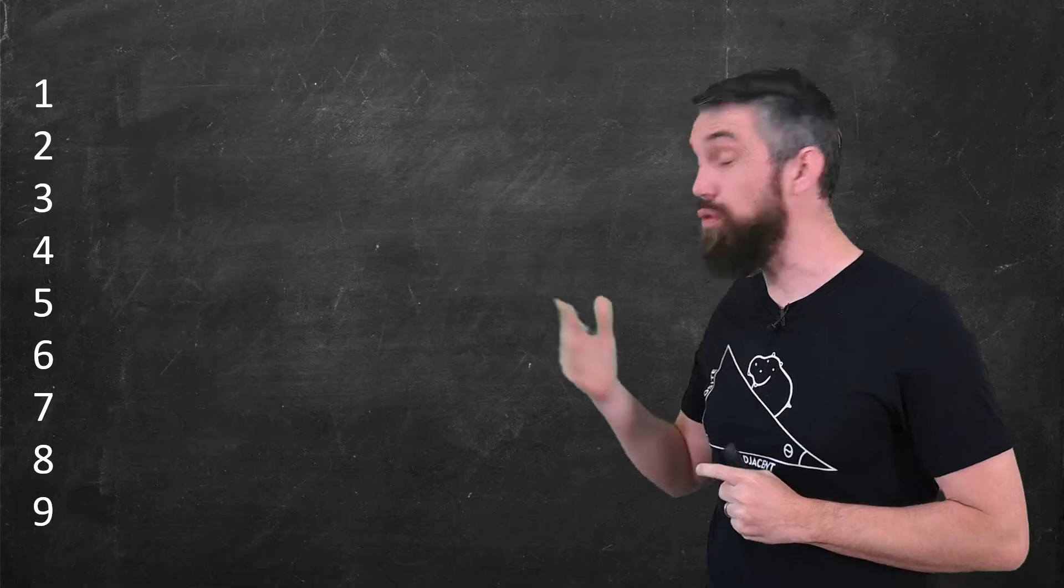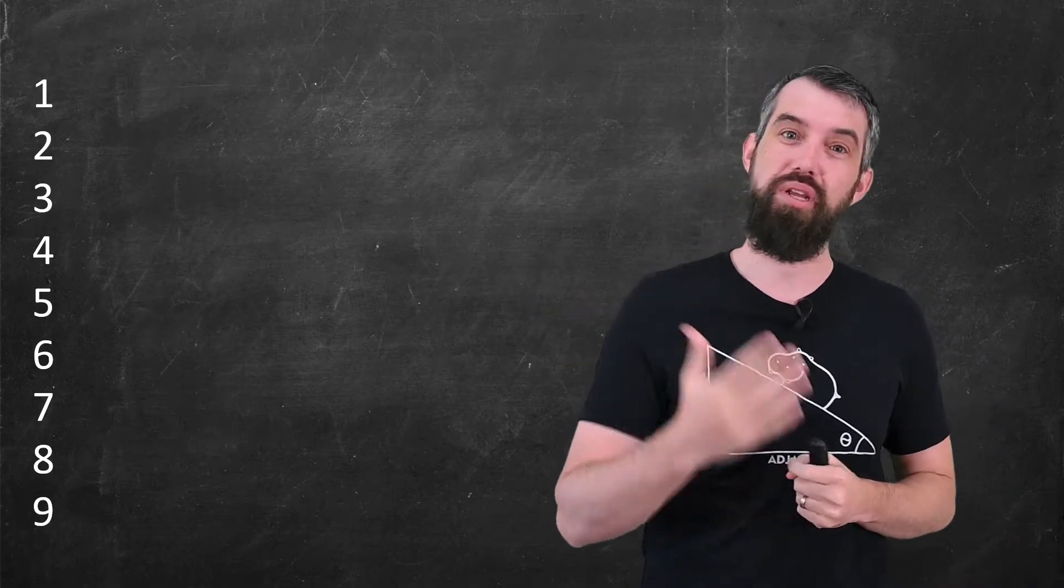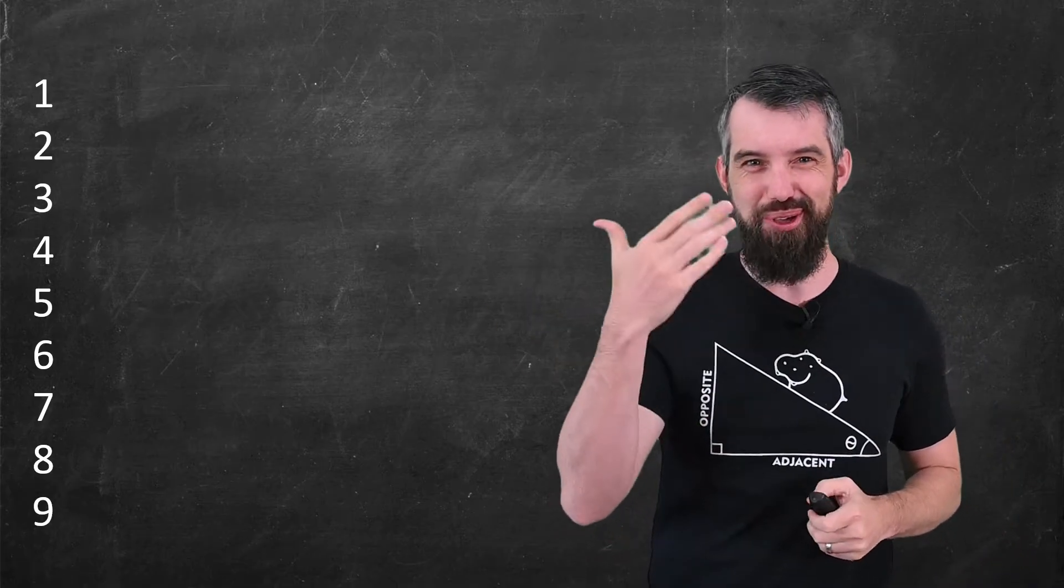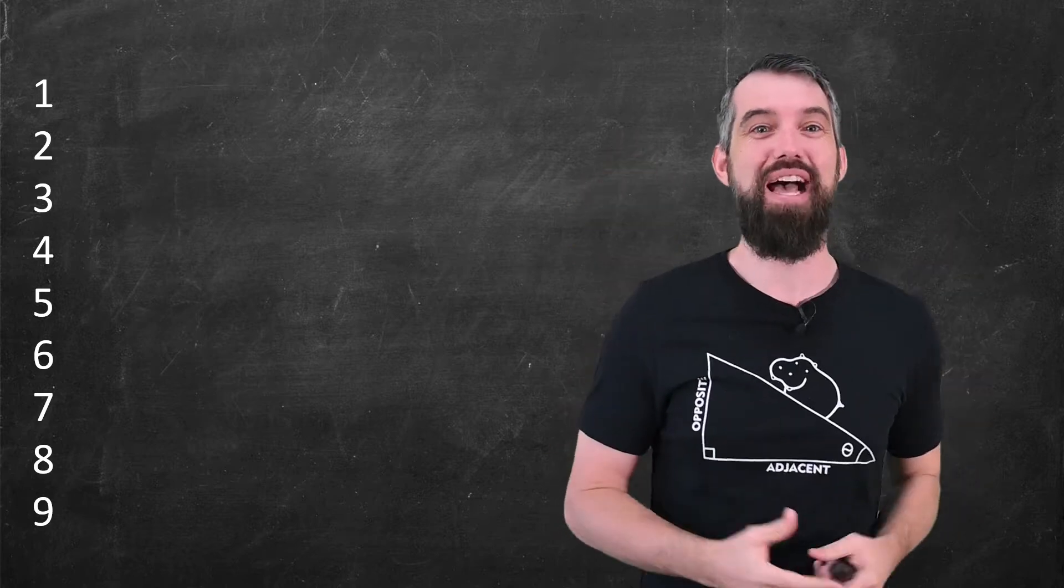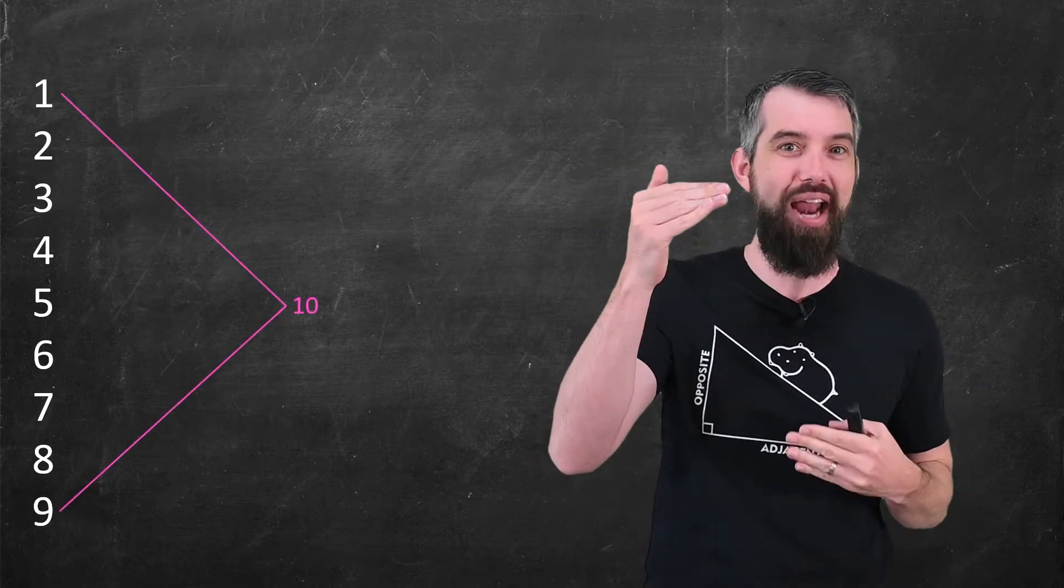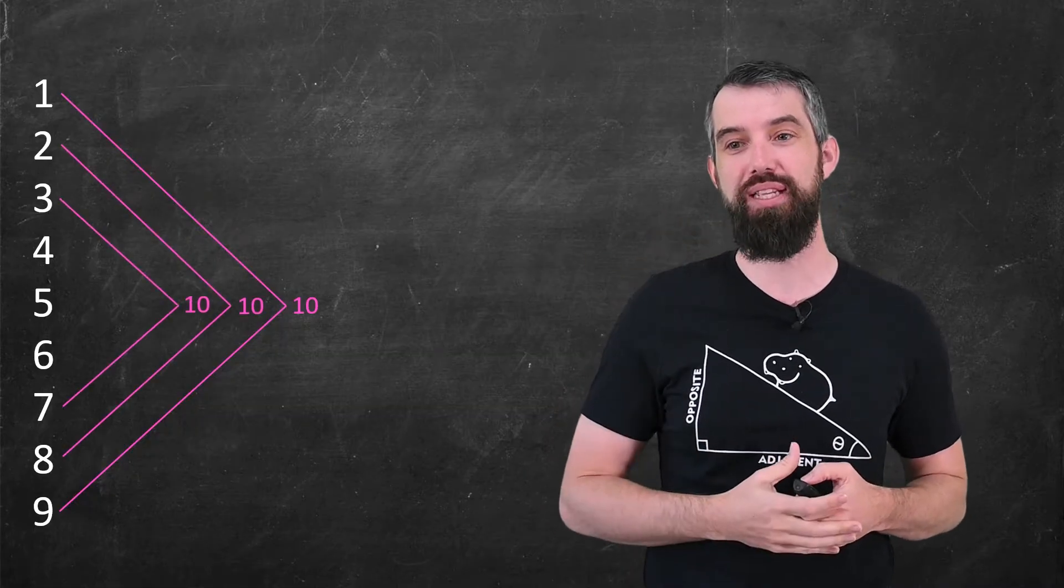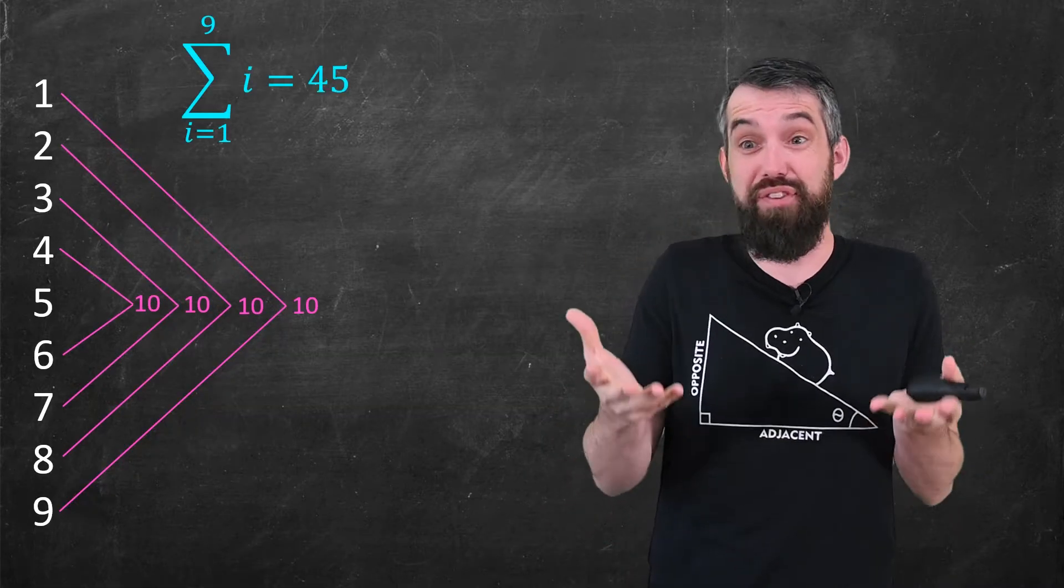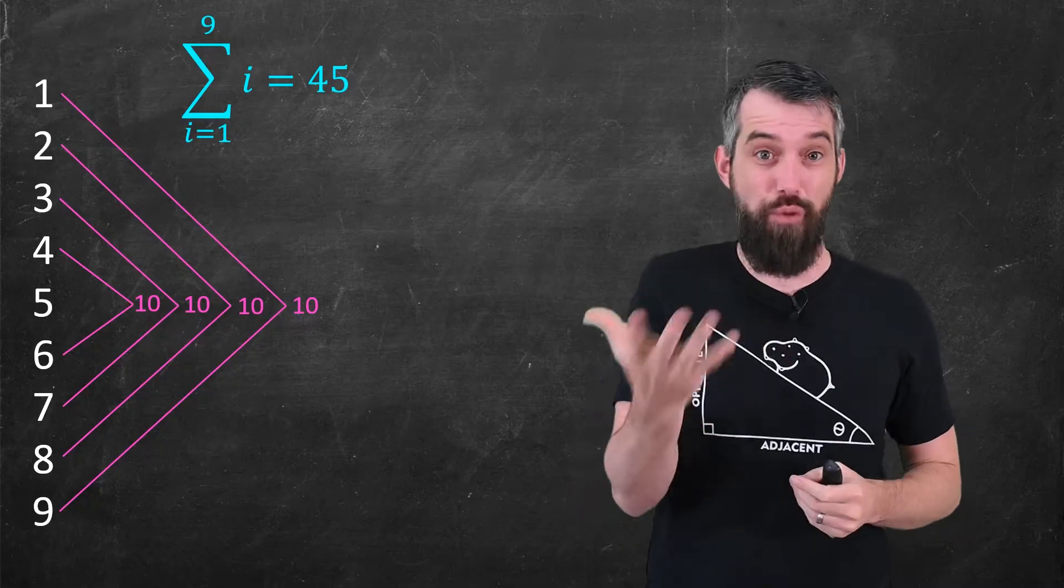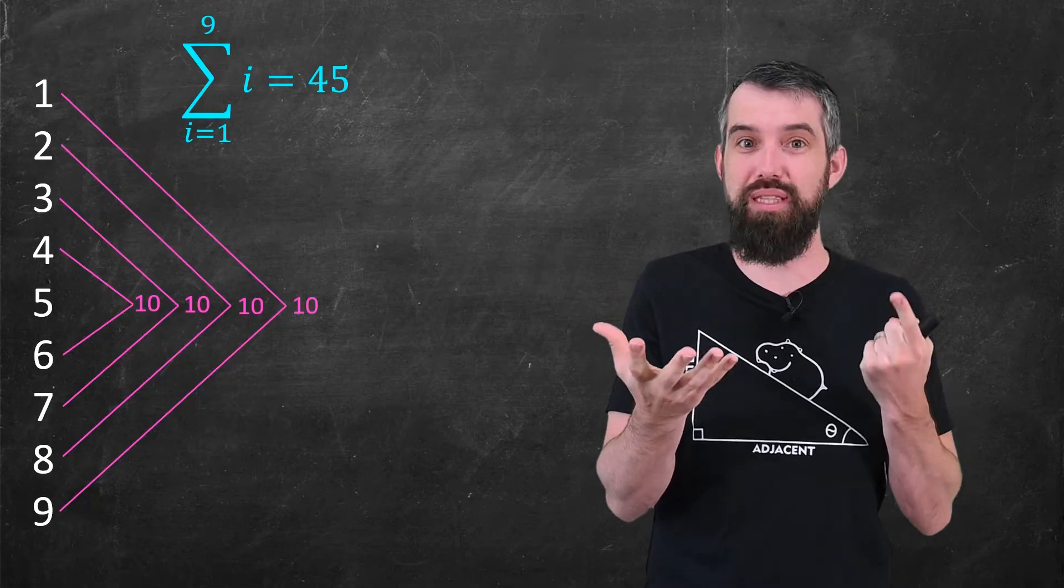To prove our lemma, we're going to need to know the sum of the numbers between 1 and 9, which you could compute out if you so wished. But I want to show you, as a side tangent, a really fast way to be able to do this. I noticed that the 1 and the 9 add up to 10, as does the 2 and the 8, as does the 3 and the 7, and the 4 and the 6. And as a result, the sum of the first 9 numbers is just the 4 tens, which is 40, and the 5, which was left out, 45.